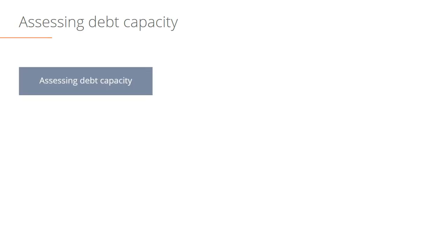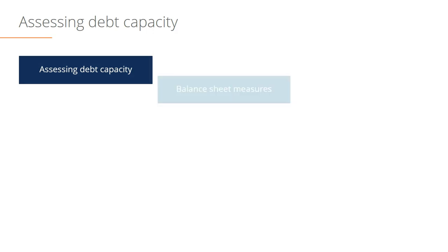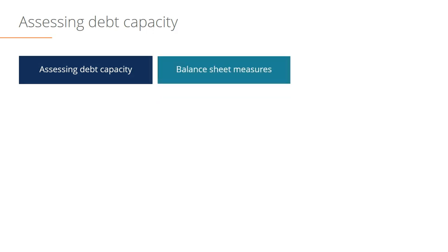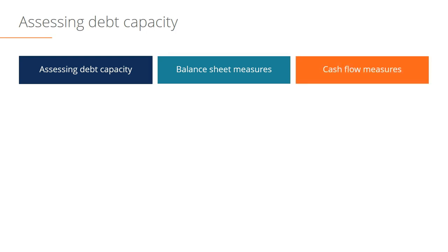Assessing debt capacity. In this section we're going to look at how much leverage a business can handle. The two main measures are going to be by looking at the balance sheet and looking at cash flow measurements. These two will determine how much debt a business can handle in an M&A transaction.